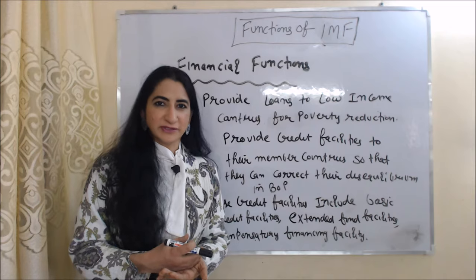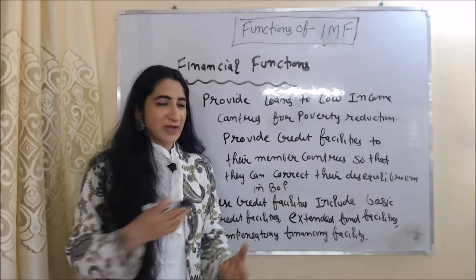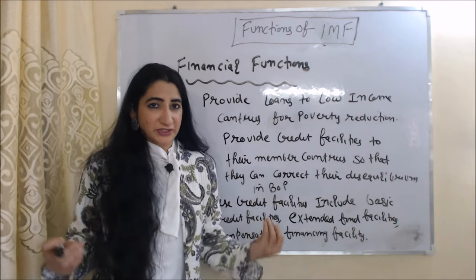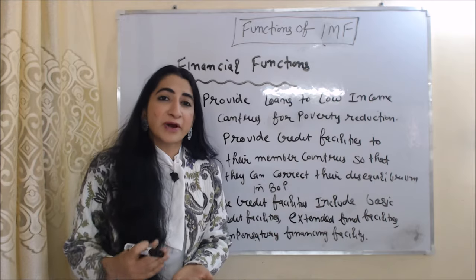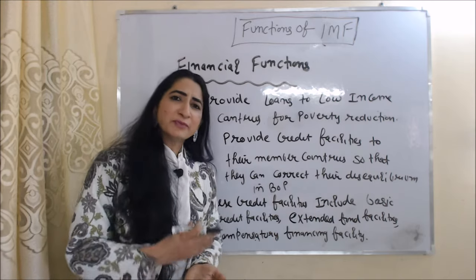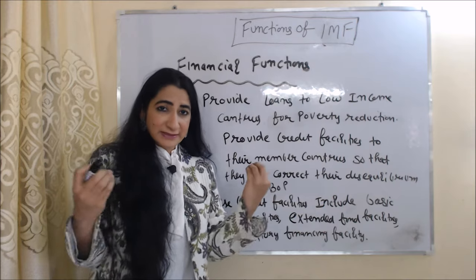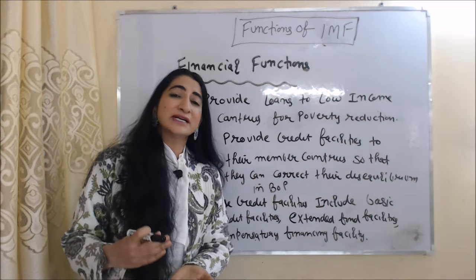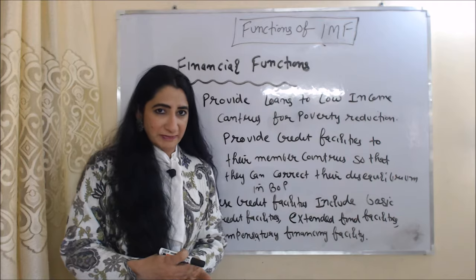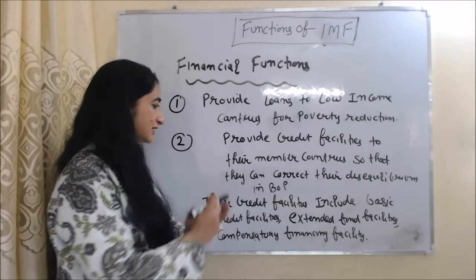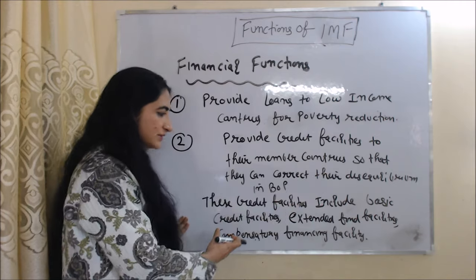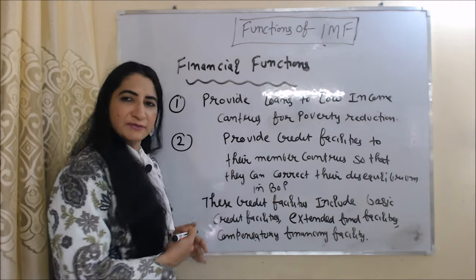Now we are going to talk about financial functions of IMF. IMF provides loans to low-income countries for poverty reduction. IMF also provides credit facilities to their member countries so that they can correct their disequilibrium in balance of payment. These credit facilities include basic credit facilities, extended fund facility and compensatory financing facilities.